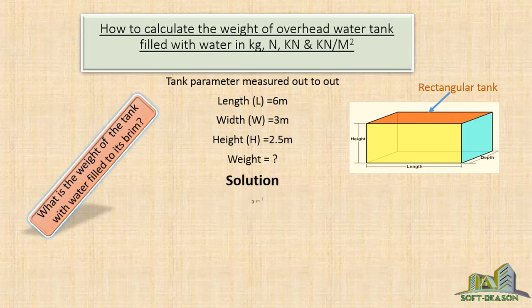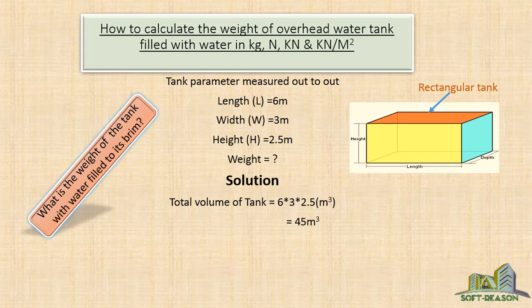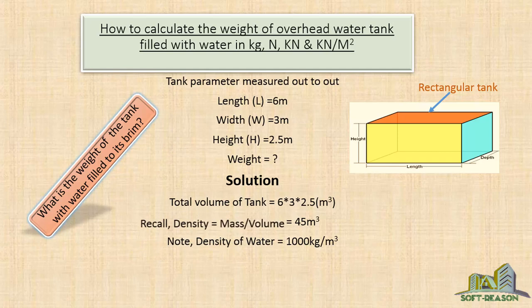So, getting to a solution: the total volume of the tank equals 6 times 3 times 2.5 cubic meters. When you multiply it, you have 45 cubic meters. Note: the density of water equals 1000 kilograms per cubic meter.